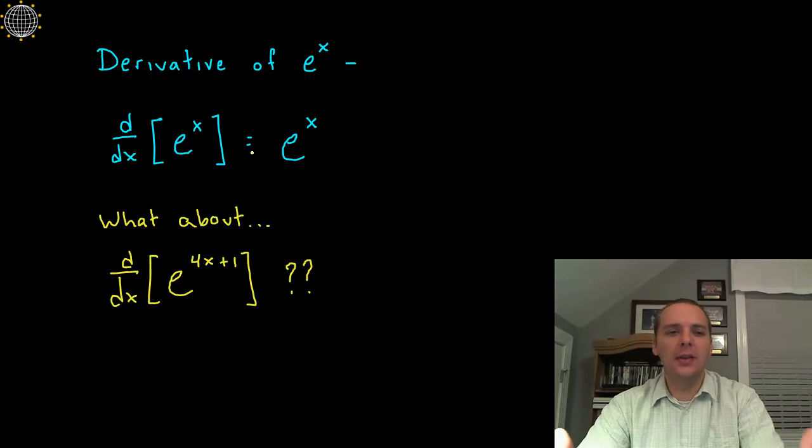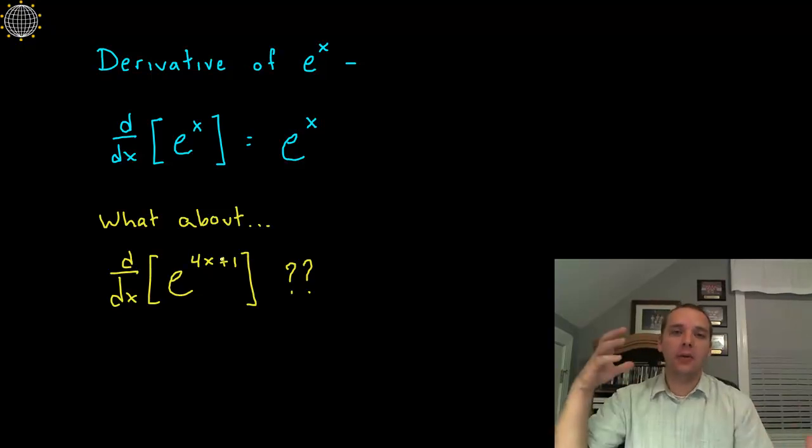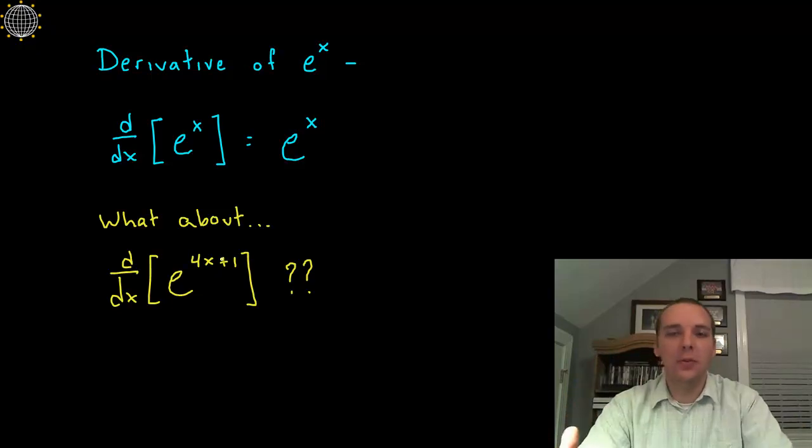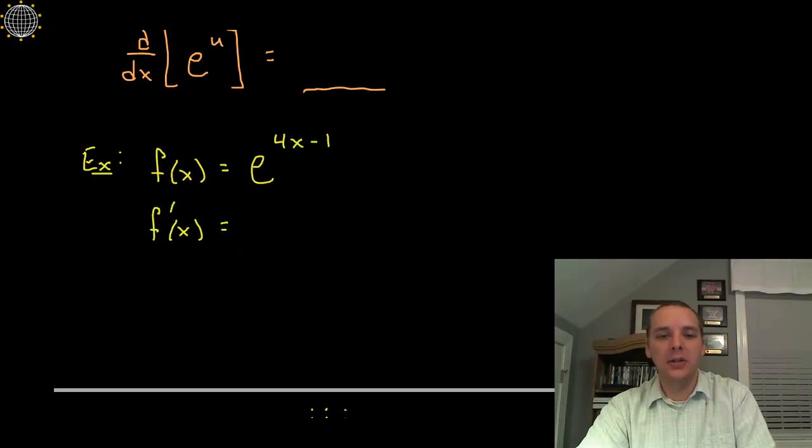So you might say well that's pretty worthless to have this rule if we can't extend it to any other functions. Well in fact we're actually very very close, it's really just a small detail that we need to hash out. The rule that we're missing here when you have something other than x in the exponent is the chain rule, right? Because what we have here is an outer layer which is the e part and an inner layer which is the exponent. So if we remember how to handle the chain rule then we can take derivatives of any exponential function and not just the very limited just e to the x. So here's what it looks like.